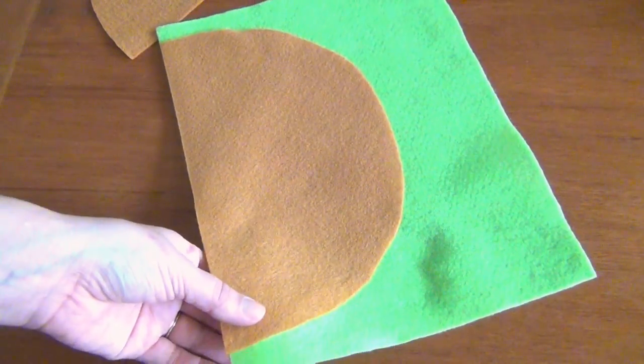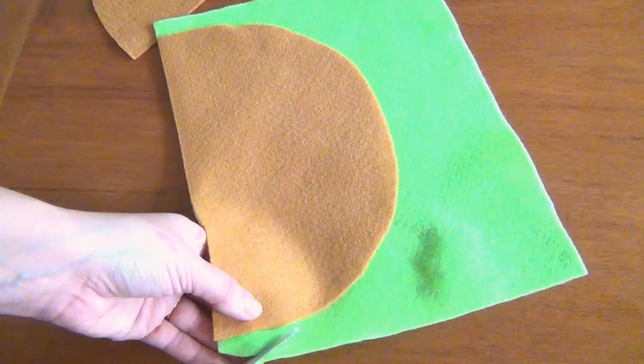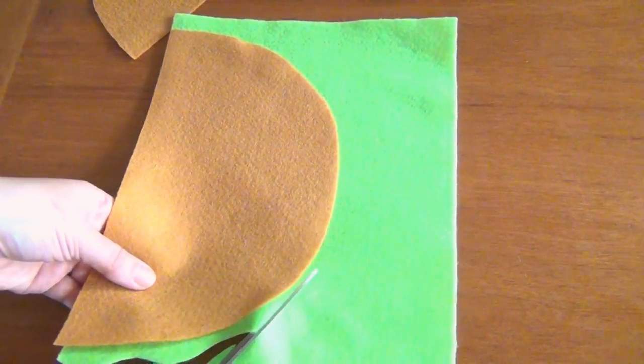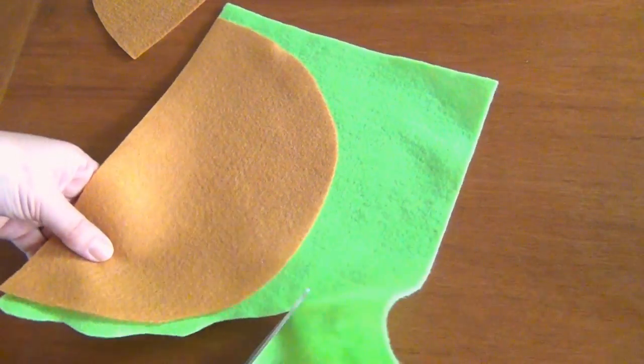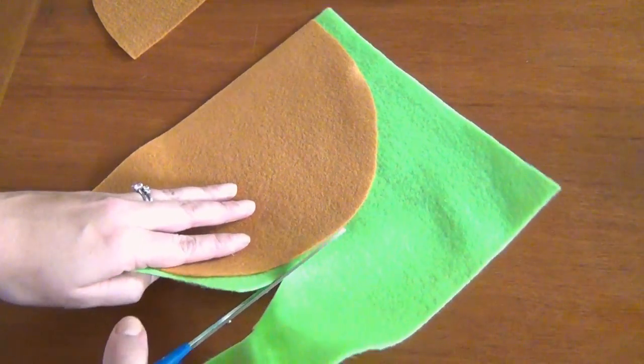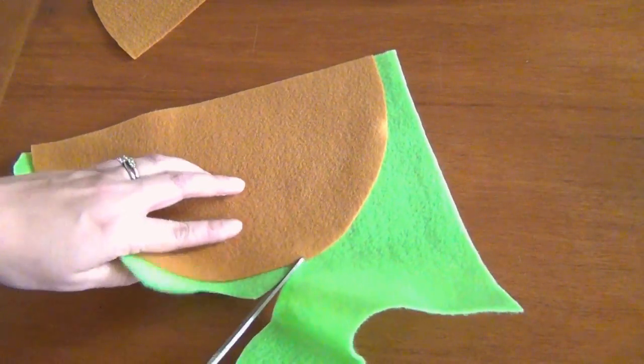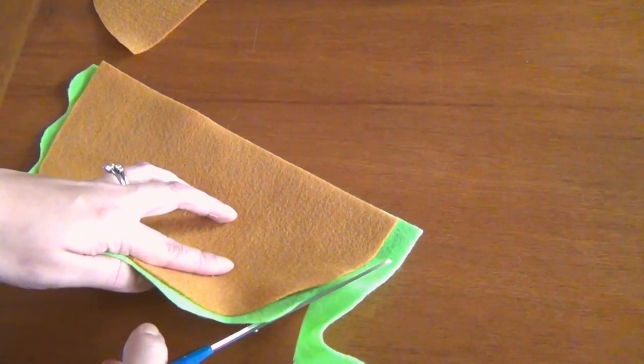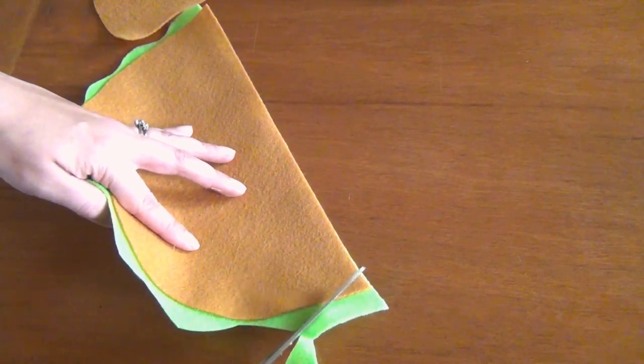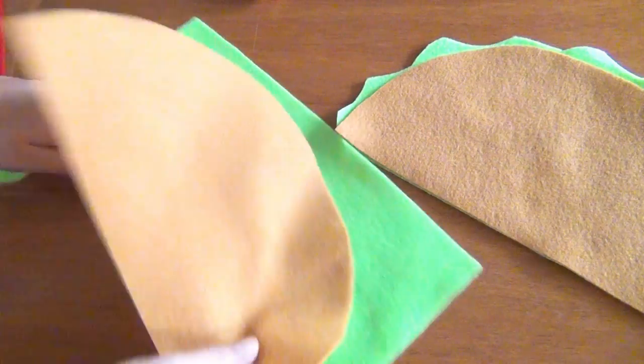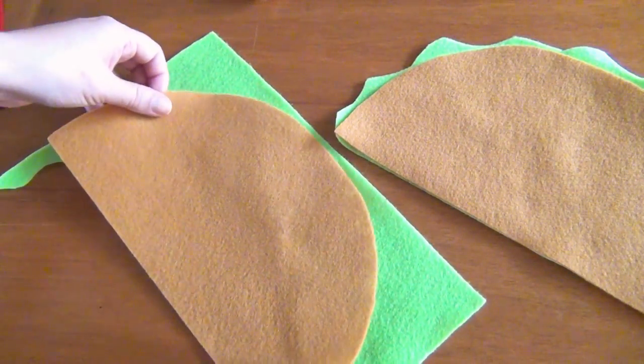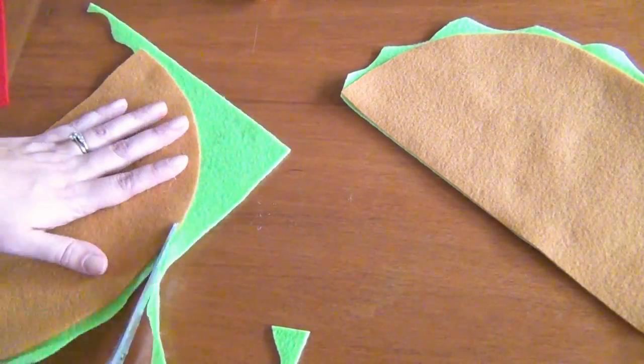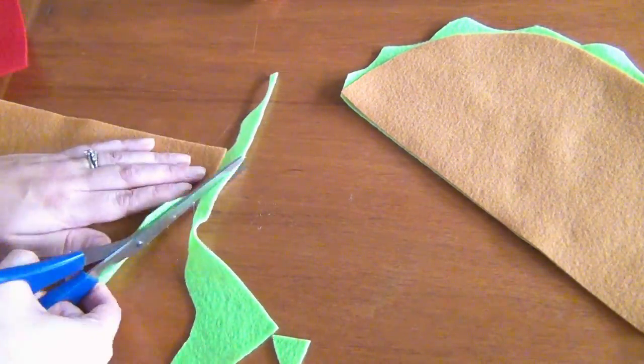Next set your taco shell onto your piece of green felt and this is going to make the lettuce in the taco. So set it flush against the edge and then cut a curvy line just past the edge of the taco shell felt. This is going to make it look like the lettuce is sort of sticking out over the edge and cut it from one side all the way to the other. If you want to cut out the excess felt underneath the taco shell you can but I just left mine on one side. Then use the rest of your leftover green felt to do the same for the other taco shell.